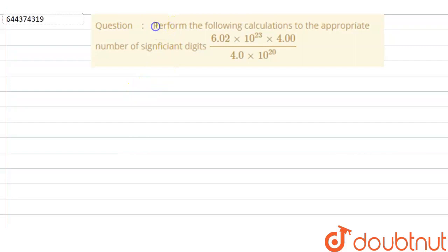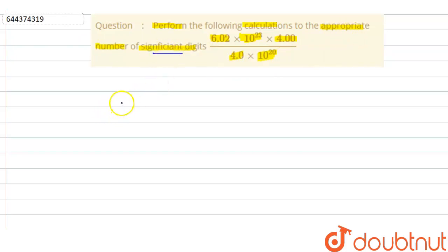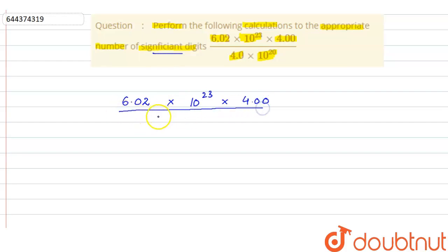The question says: perform the following calculations to the appropriate number of significant digits. We have 6.02 × 10²³ × 4.00, divided by 4.0 × 10²⁰. In this question we have to perform this calculation to the appropriate number of significant digits.